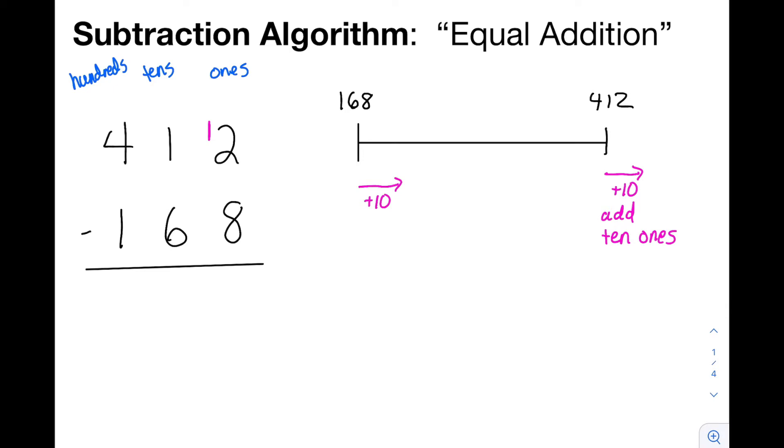But in order to do this, instead of adding 10 ones, I'm going to add one 10. So in other words, instead of having six tens, now I'll have seven tens. In both cases, I added 10. It's just whether I added 10 to the ones place or added 10 to the tens place. Now I can subtract. 12 ones minus 8 ones gives me 4 ones.